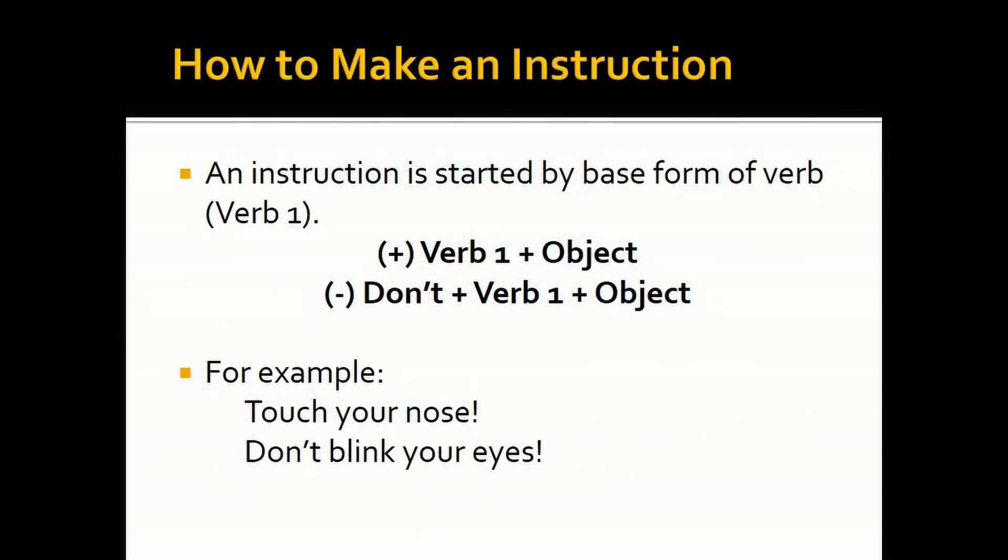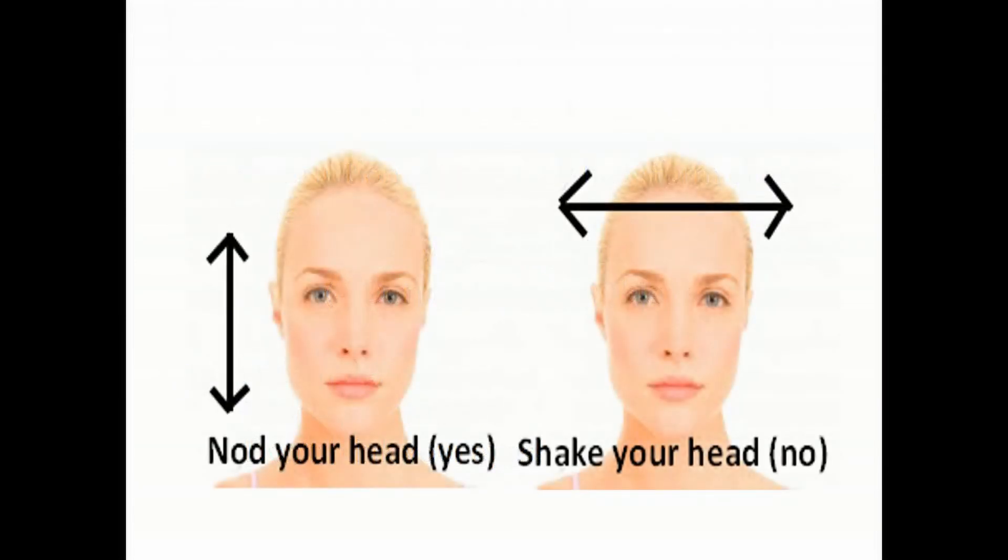The second point is making instructions. In making instructions, you only need verb one. For positive, you use verb one plus object. For negative, you use don't plus verb one and the object. Look at the examples: Touch your nose. Don't blink your eyes.